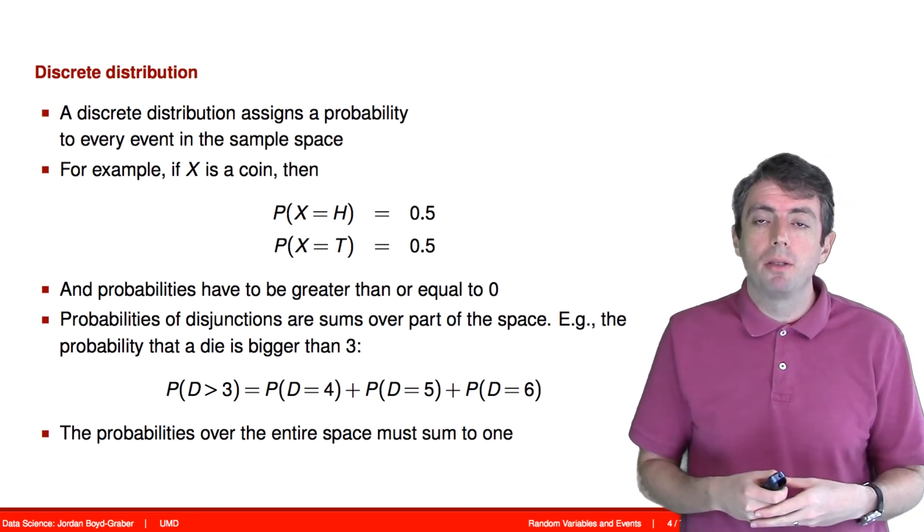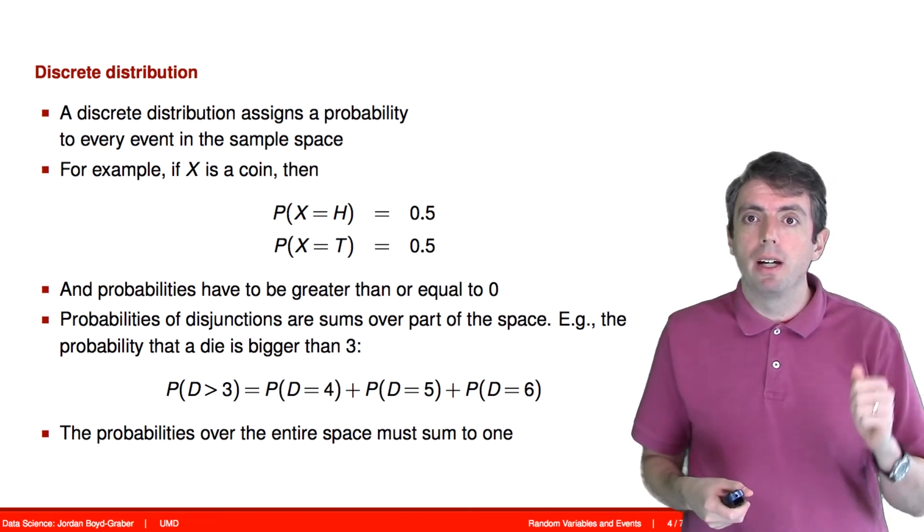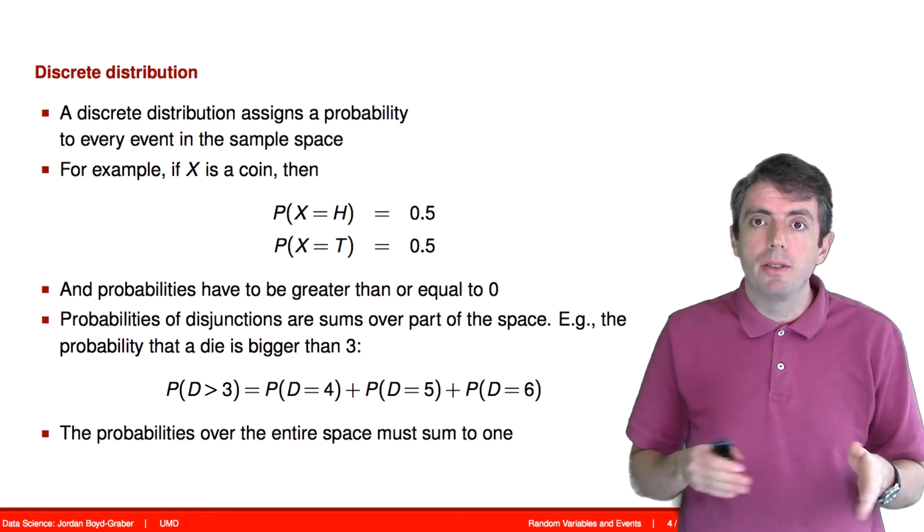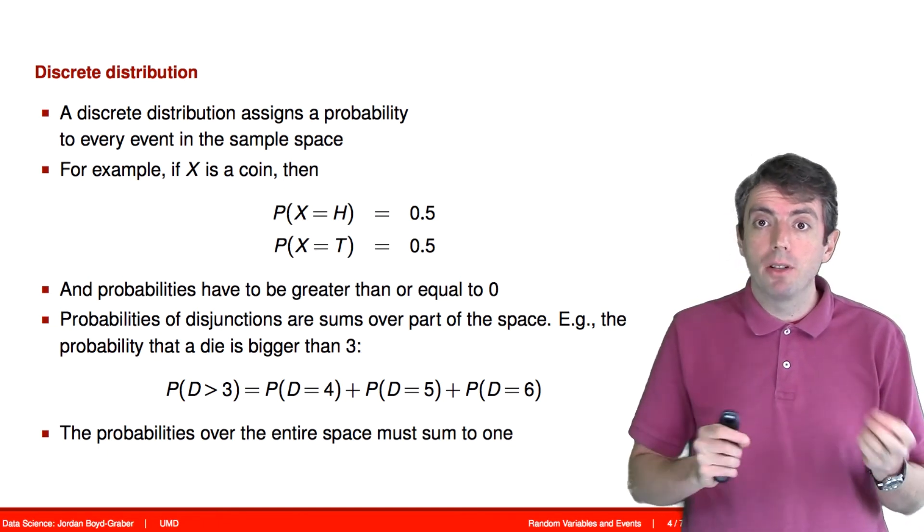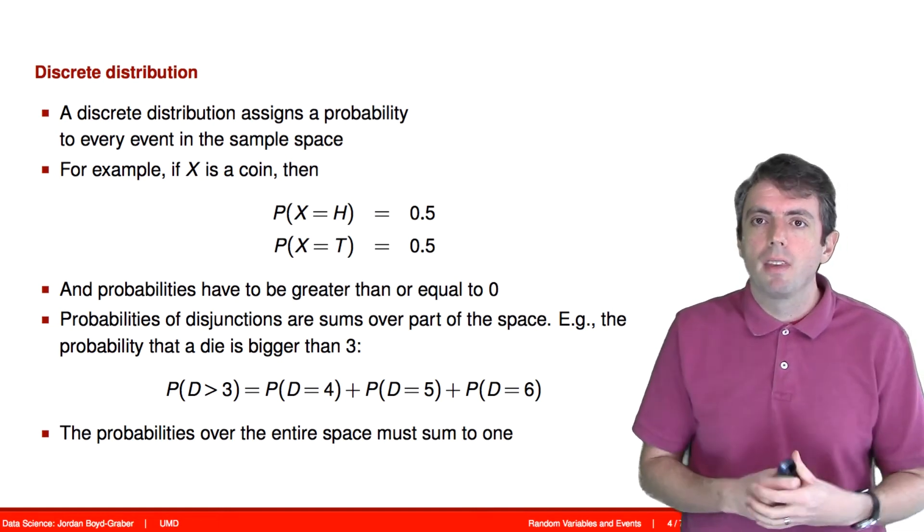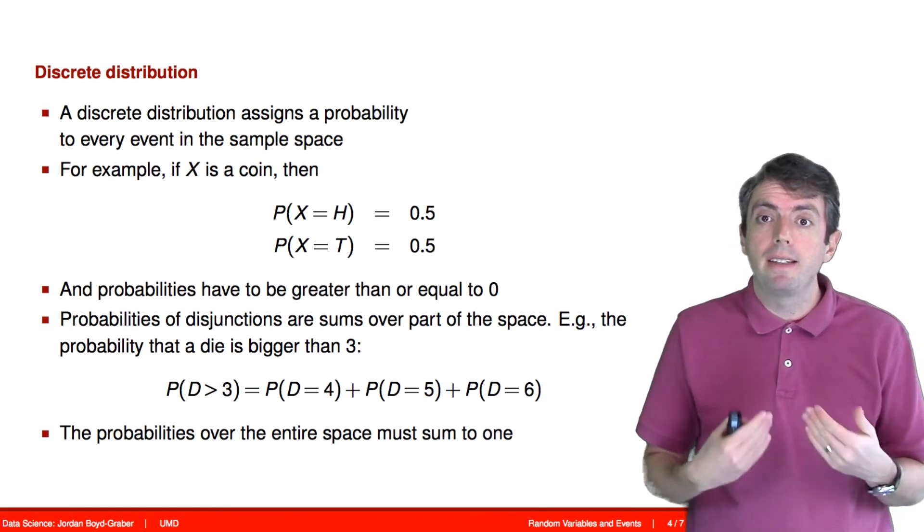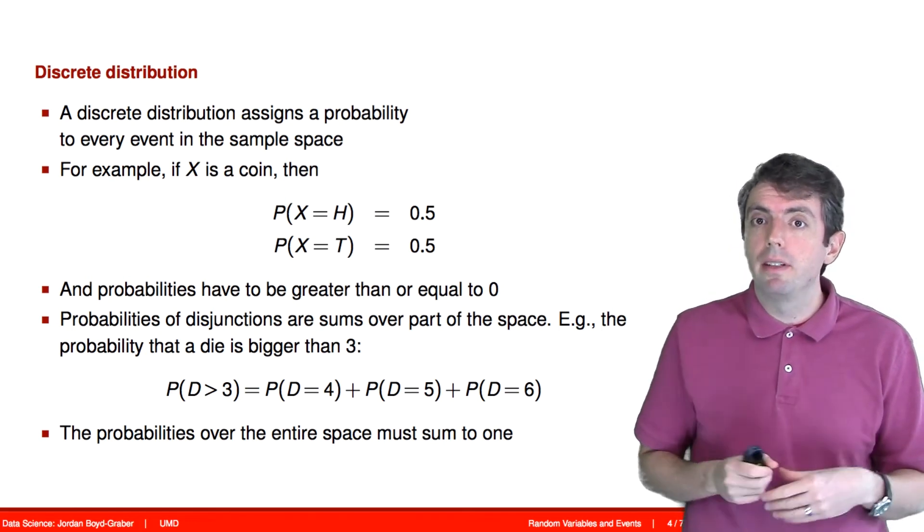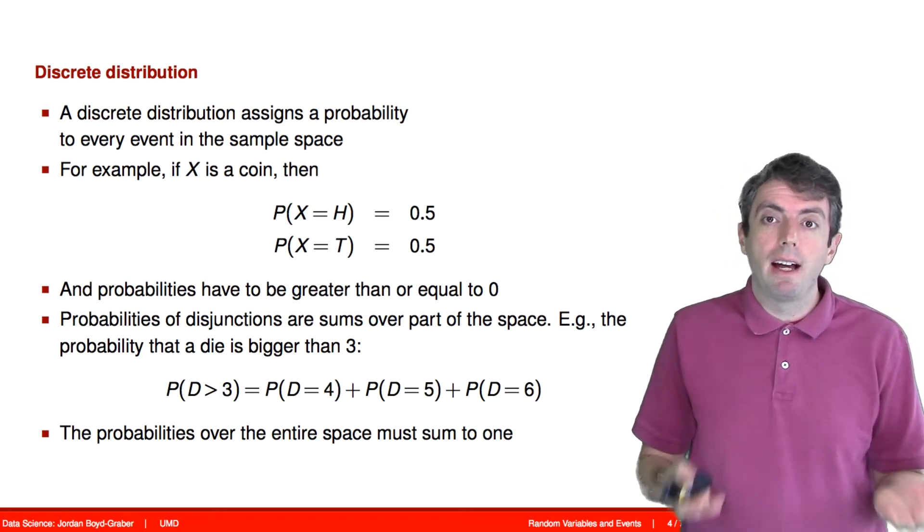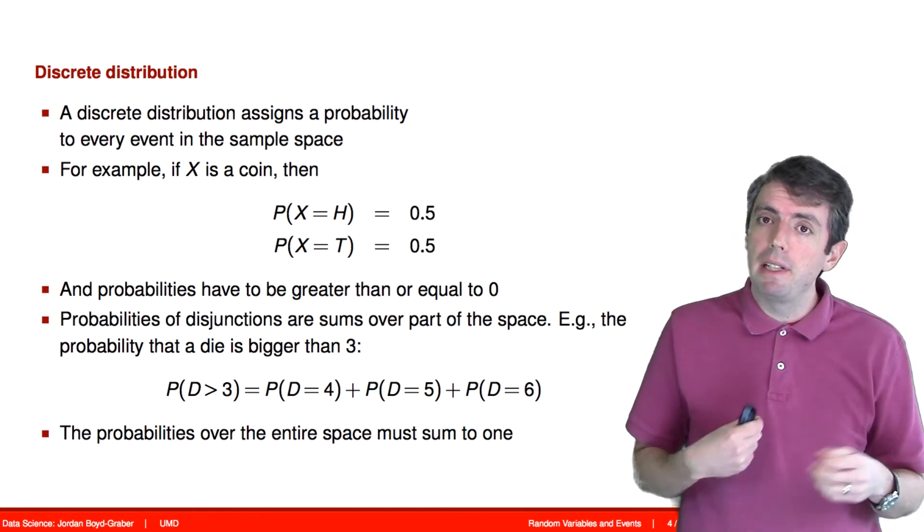So first, a probability distribution has to sum to one. That is, if you flip a coin, one of two things is going to happen. You can't have any space left over in the probability-outcome distribution that is not accounted for. Another property of a probability distribution is that the probabilities have to be greater than or equal to zero. Now, a probability could be zero. That means that an outcome just is impossible. It's not going to happen. But it certainly can't be negative.